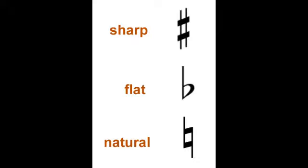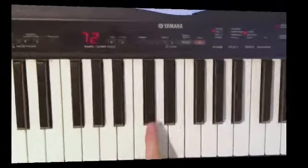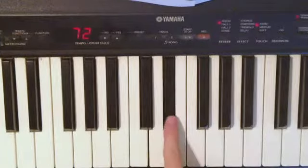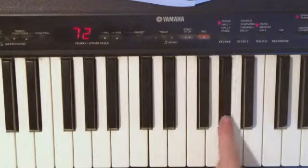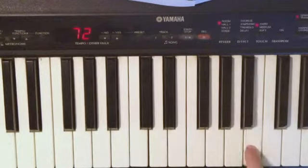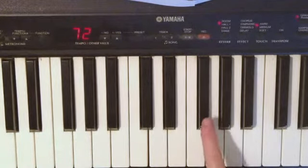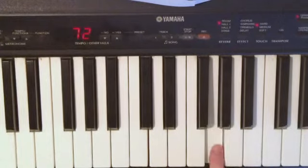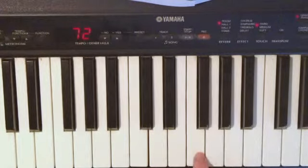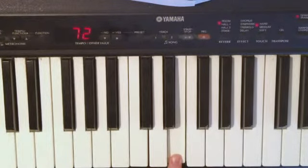Before you can really understand sharps, flats, and naturals, the first thing you want to know is that the piano itself is made up of half steps. These are all half steps. So from here to here is a half step, from here to here is a half step, from here to here is a half step.